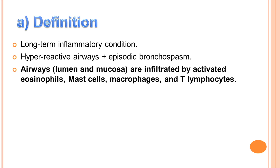The most important point is that the lumen and the mucosal airways are infiltrated by activated eosinophils, mast cells, macrophages, and T lymphocytes. Câu quan trọng nhất là lòng ống và niêm mạc ống dẫn khí sẽ bị thâm nhiễm bởi các bạch cầu ưa acid được kích hoạt, các mast cell, các đại thực bào và các tế bào lymphocytes.